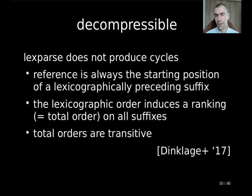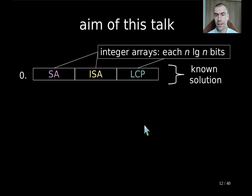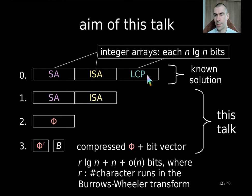But the question is, how can we compute that efficiently — within linear time, this is our target — and how much space is needed? In the known solution, it is written that you can compute it in order of n log n bits of space. This known solution uses three integer arrays, where each array takes n log n bits. What I want to focus on is a stepwise reduction of the space, first by removing the LCP array, then transforming these three arrays into an array called phi, and finally introducing a compressed representation of phi called phi prime, which together with B we can emulate phi. The third solution uses just r log n plus n plus small order of n bits, where r is the number of character runs in the Burrows-Wheeler transform.